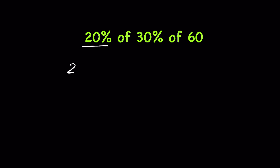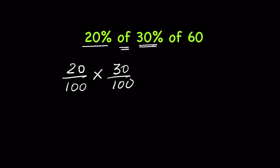20 percent of 30 percent of 60 — how to calculate this. If you just follow the terms: 20 percent means 20 upon 100, 'of' means multiplication, then 30 percent means 30 upon 100, then 'of' means multiplication, and then we have 60. So this is the equation that we have.